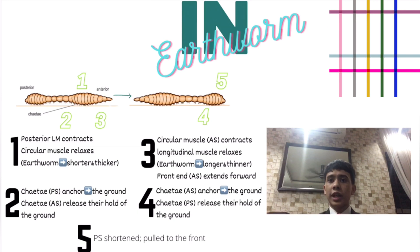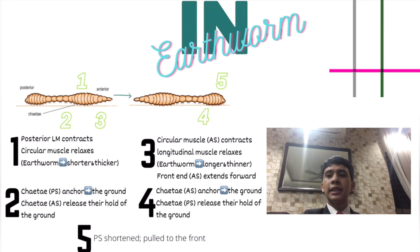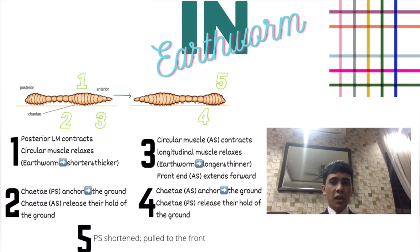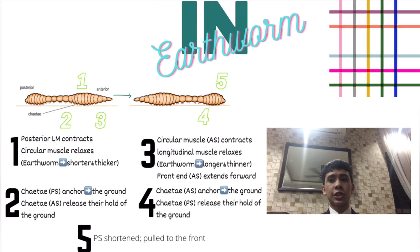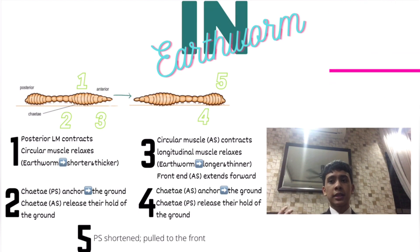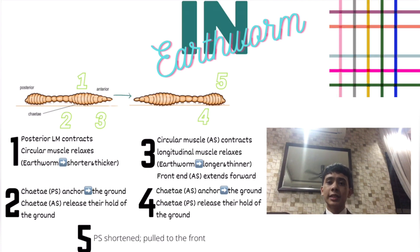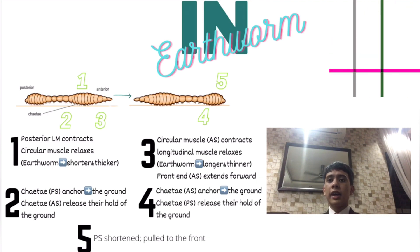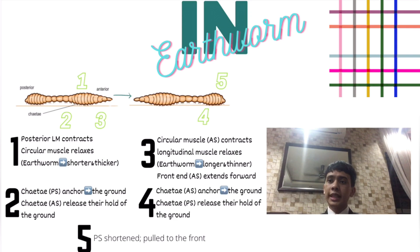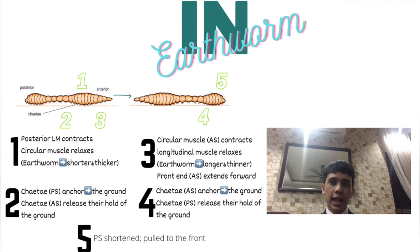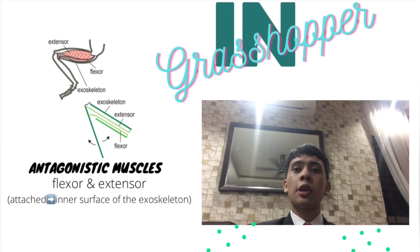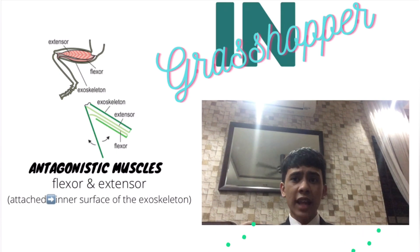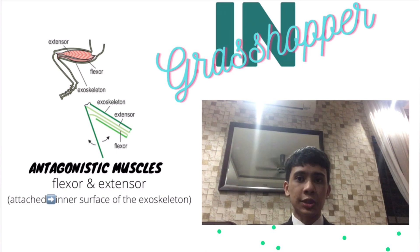Lastly, the front end of the anterior segment extends forward. Fourth, the setae at the anterior segment anchor to the ground and the setae at the posterior segment release their hold. Finally, the posterior segment is shortened and pulled to the front. Next, in grasshoppers, there are antagonistic muscles called the flexor and extensor, attached to the inner surface of the exoskeleton.